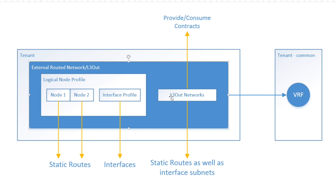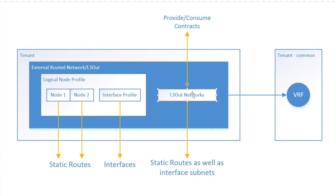The L3Out network is where you define the subnets that exist within this layer 3 out. Here I would expect to see the static route subnet as well as the interface subnet. From a contract standpoint, just like at an EPG level you apply contracts to EPGs, in layer 3 out you define contracts at the layer 3 out network level. Now let's go to the ACI fabric and take a look at what the configurations look like.